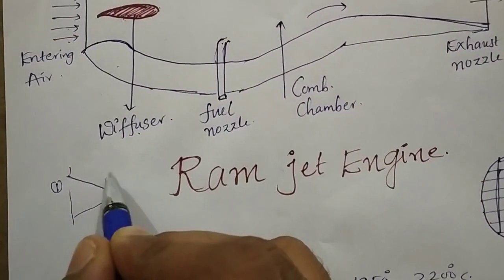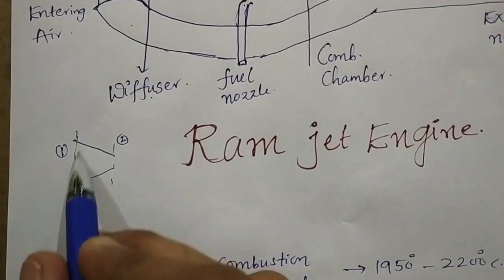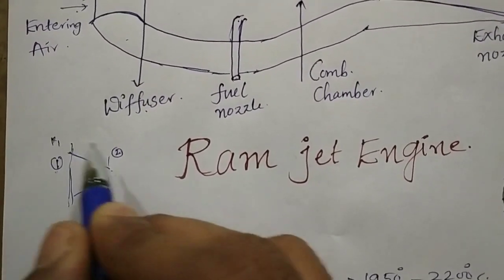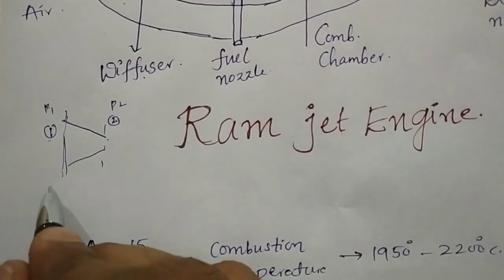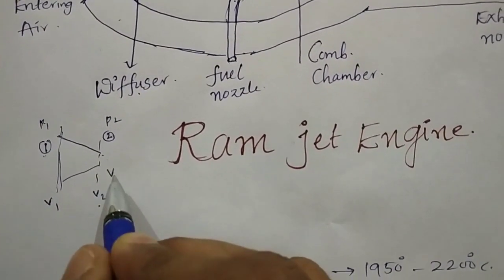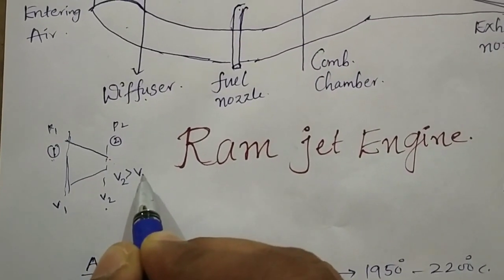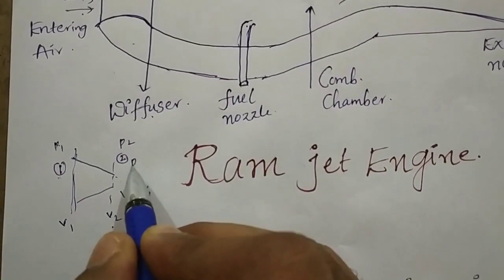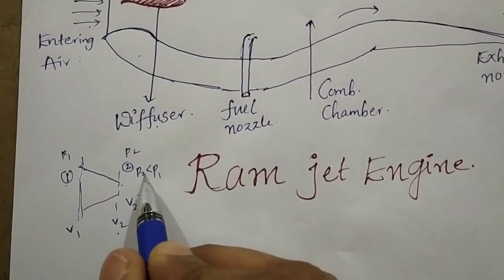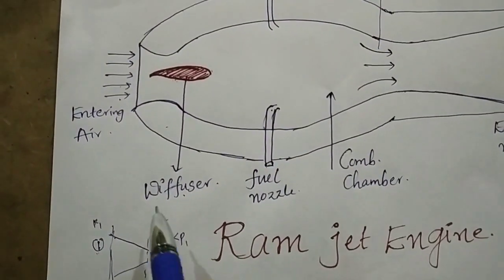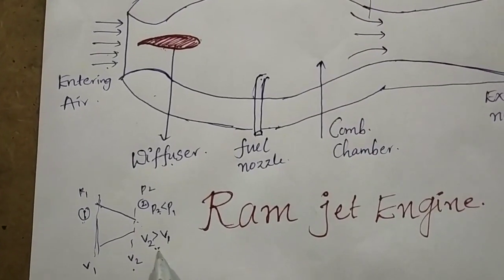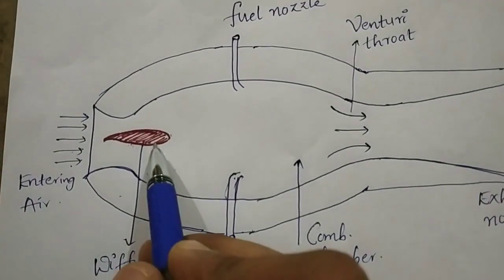In a nozzle, from section 1 to section 2, the velocity V2 will be more than V1, and the pressure P2 will be less than P1. So a nozzle decreases the pressure and increases the velocity. But the diffuser is opposite — it increases the pressure and decreases the velocity. That is the main function of the diffuser.